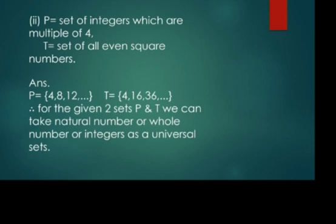Now in both sets, the elements come under natural numbers, so we can consider natural numbers as the universal set. We can also consider whole numbers or integers, since P and T would be subsets of integers as well. So natural numbers, whole numbers, or integers can be taken as the universal set.